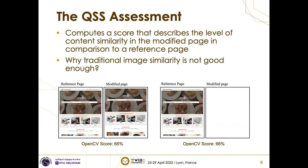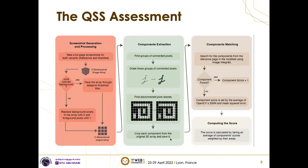So how do we do it for structural similarity? Here's a rough structure of how we break it down. We have five different steps: we start by taking screenshots, extract components, match those components, and compute the score. I'll go over all of these one by one.